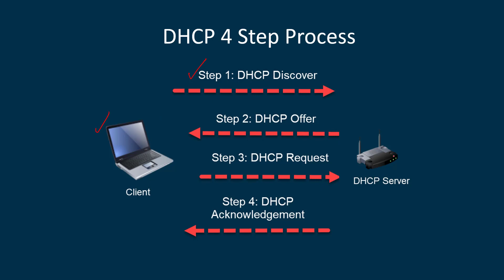Your DHCP server will respond with an Offer — 'here's what I have, I can give you this IP address and these settings.' If the client accepts, it will send a Request: 'I want that IP address.' The server then responds with an Acknowledgment, saying 'I'm giving you these IP settings,' and now your laptop will automatically be configured.